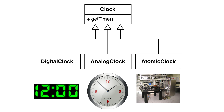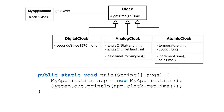Let's look at the concept of a clock. A clock has a method called getTime. We could also define three child classes: digital clock, atomic clock, and analog clock. All three children are examples of a clock — a digital clock is a clock. All three children have the method getTime, but the difference is how they get the time. Each clock has its own method of determining the time. The internal methods for calculating the time can be different, but the API to other classes is the same. We could swap out one clock for another in our code, and the application should not know the difference.